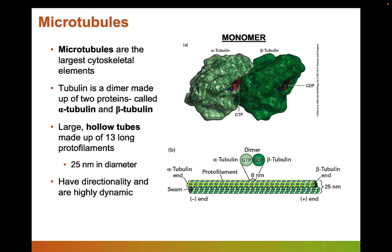Like actin, microtubules have directionality and are highly dynamic, constantly polymerizing and depolymerizing. They have a plus end and a minus end. At the plus end, GTP hasn't been hydrolyzed yet, so this end grows faster. At the minus end, the GTP has been hydrolyzed to GDP and growth is slower. This directionality is important because motor proteins move preferentially toward either the plus end or the minus end.